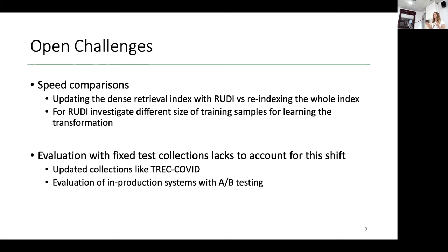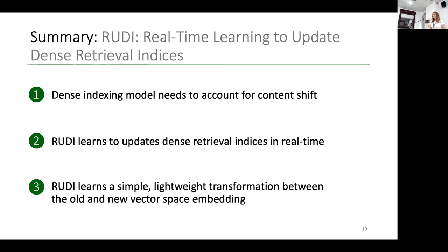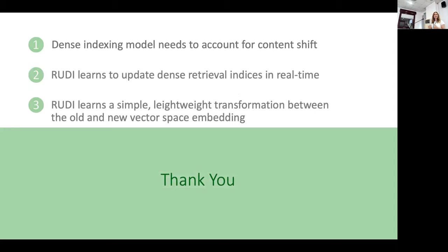Another challenge we see is that evaluation on fixed test collections does not account for this content shift, and therefore we would need to use updated collections like the TREC COVID collection, or evaluate in production systems, for example with A/B testing. What I really want to take home is that dense retrieval indexing models need to account for content shift if you want to use them in production systems. With RUDY, we want to learn these updates using a simple and lightweight transformation function between the old and the new vector space embedding. Thank you.